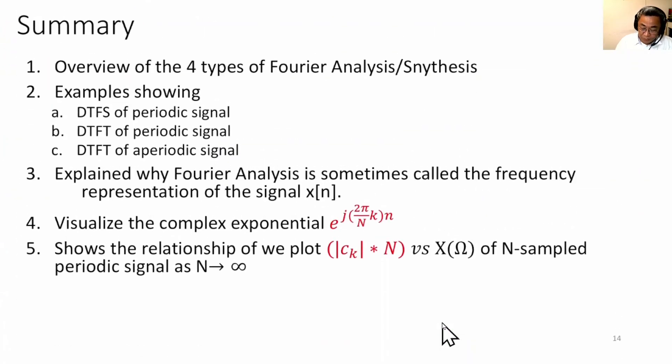Right. So this concludes this chapter of 6.1. We have overviewed four types of Fourier analysis and synthesis. We have shown DTFS of periodic signal, DTFT of periodic signal, DTFT of aperiodic signal. We have also shown why it is called frequency representation. And more importantly, we have also visualized this complex exponential rotating. And we've seen the last slide, the relationship between N·Ck and X(Ω) as the N-periodic sample becomes aperiodic as N goes to infinity. Thank you.